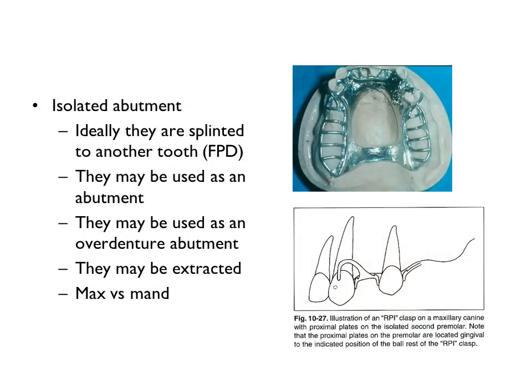Use of the isolated abutment is somewhat controversial. Ideally, the isolated abutment will be splinted to a nearby tooth. Other options for the isolated abutment are to use it as a normal abutment, as an overdenture abutment, or to extract the tooth.